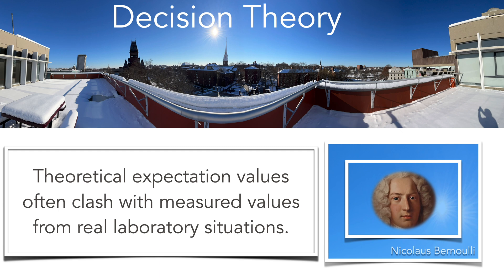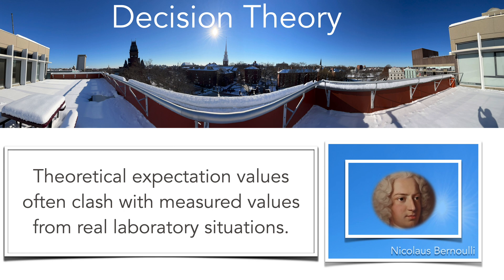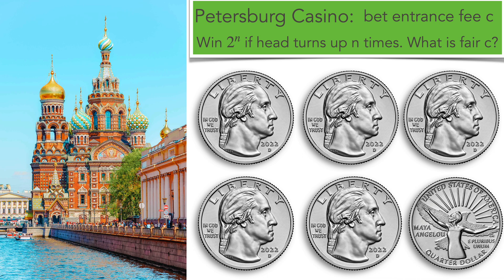Sometimes theoretical results do not match reality well — sometimes it's just impractical, for example, having to wait too long. The Petersburg Casino is a great example illustrating this, designed by Nicolas Bernoulli. You pay a fee, say $100, and win 2 to the n dollars if heads turns up n times before a tail comes up. For instance, hitting five heads then a tail wins $32, but having paid $100 you lose $68. Nobody would actually pay even $10 in practice, yet mathematically your expectation is positive even with any fee — you would eventually win.